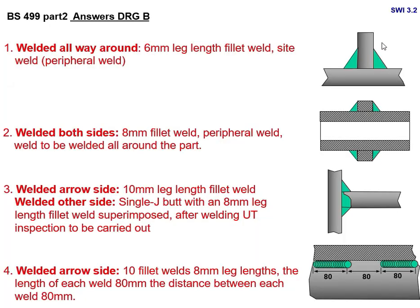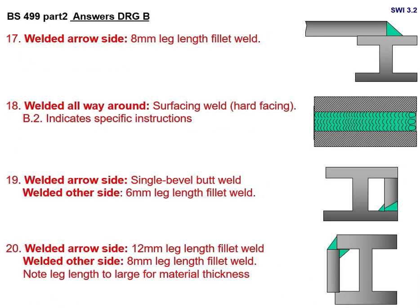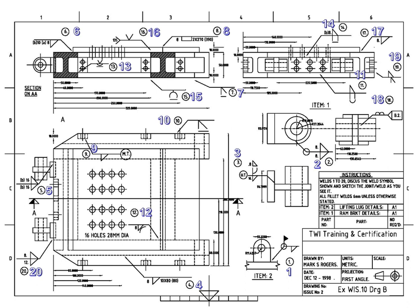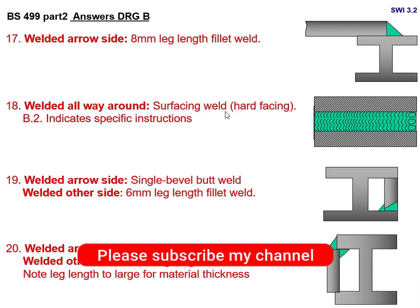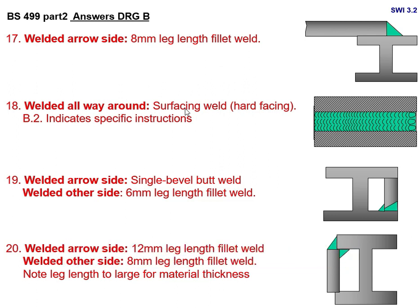Joint number 17 is a very simple one: welded arrow side — 8 mm leg length fillet weld. Carefully note which side is the arrow side. Joint number 18 shows a different configuration: welded all the way around — surfacing weld, hard facing. 'P2' indicates specific instructions are referenced — if P2 is mentioned, there is a specific instruction you must check in the engineering drawing.